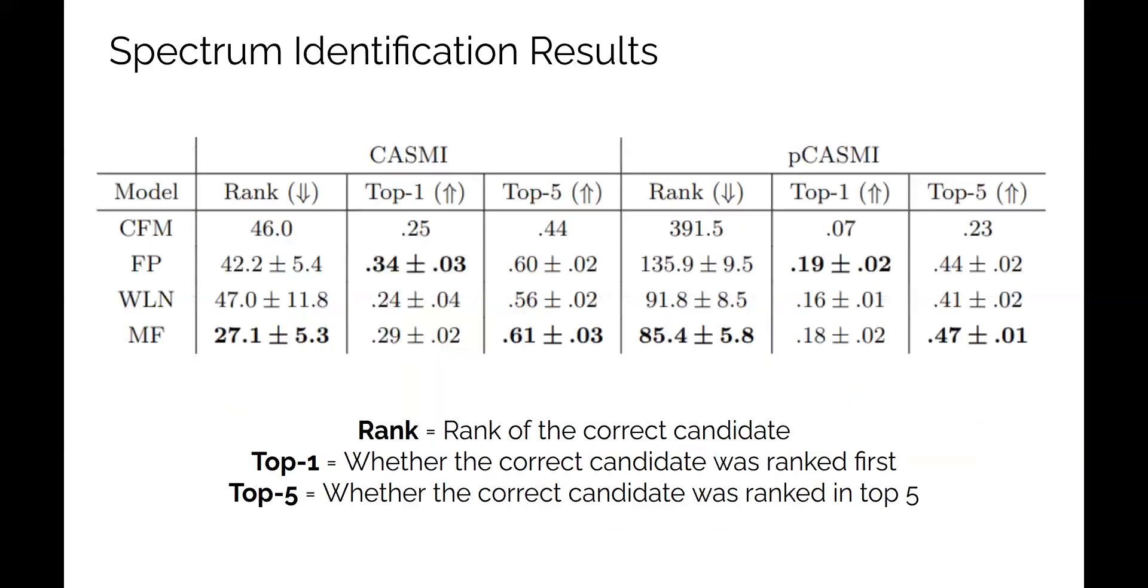We also evaluated our model on two spectrum identification tasks, the CASMI 2016 competition, which is a common benchmark for spectrum identification, and a new task we introduced called pseudo-CASMI, or pCASMI. The goal of these tasks is to simulate spectrum identification workflows in untargeted mass spectrometry experiments. For each task, the models are provided with a small set of query spectra, and for each query are asked to rank a list of candidate structures. Each model is scored using three different metrics, the average rank of the correct candidate, and the frequency with which the correct candidate is ranked in the top one and top five structures. MassFormer is able to outperform the competing models when it comes to rank and top five metrics, but is outperformed itself by the fingerprint model when it comes to top one.